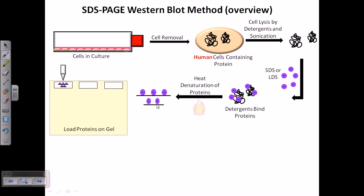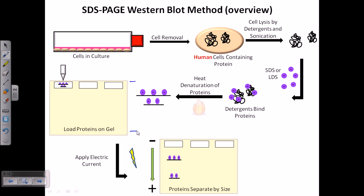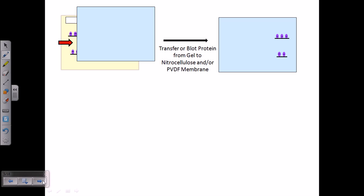We take these linearized proteins and load them onto the SDS-PAGE gel — sodium dodecyl sulfate polyacrylamide gel electrophoresis. An electric current is applied; the negative charge is at one end and the positive at the other. Since proteins are now negatively charged due to SDS, they migrate toward the positive region. Shorter proteins migrate faster and larger proteins migrate slower, giving us a size-based separation gradient.